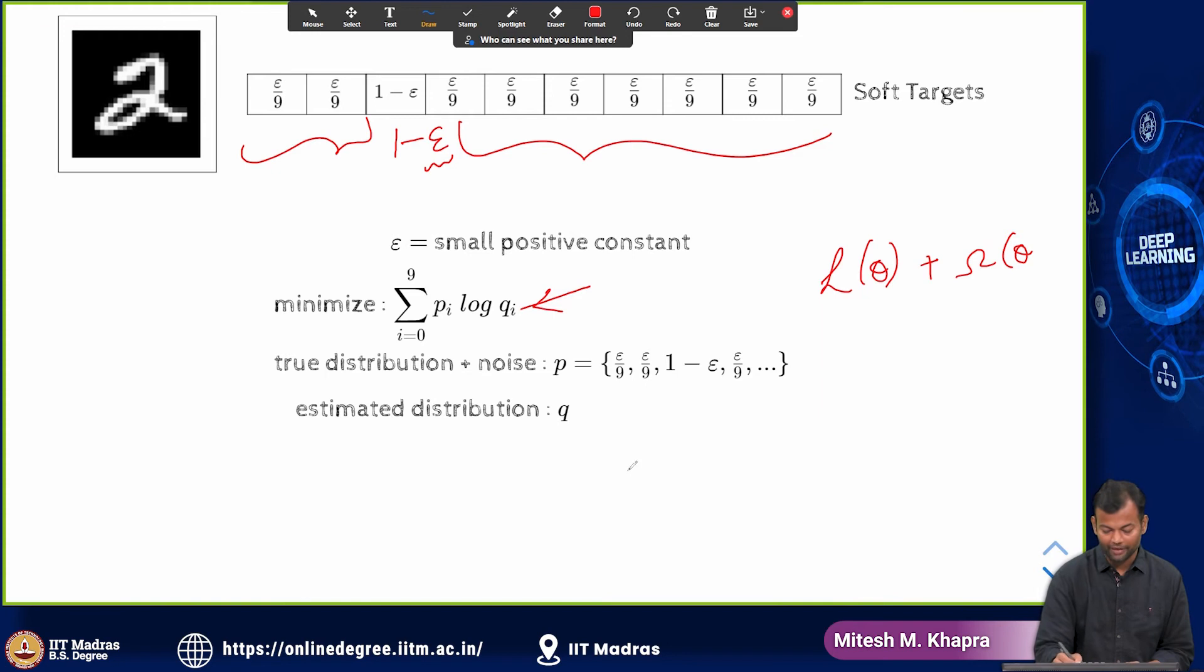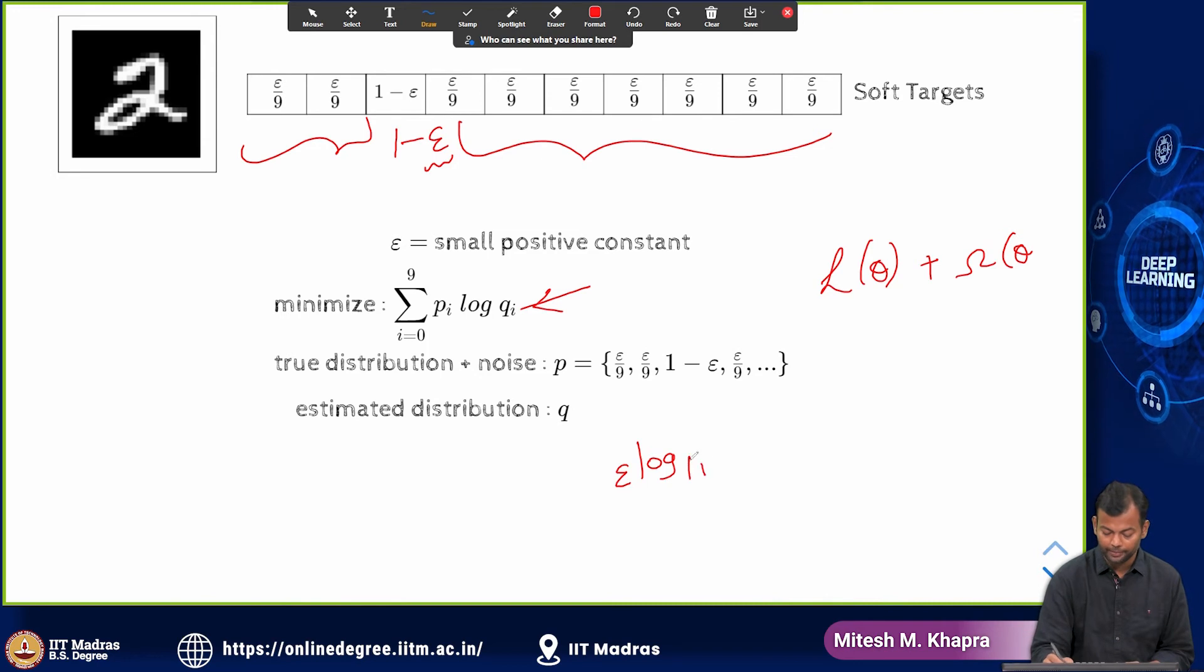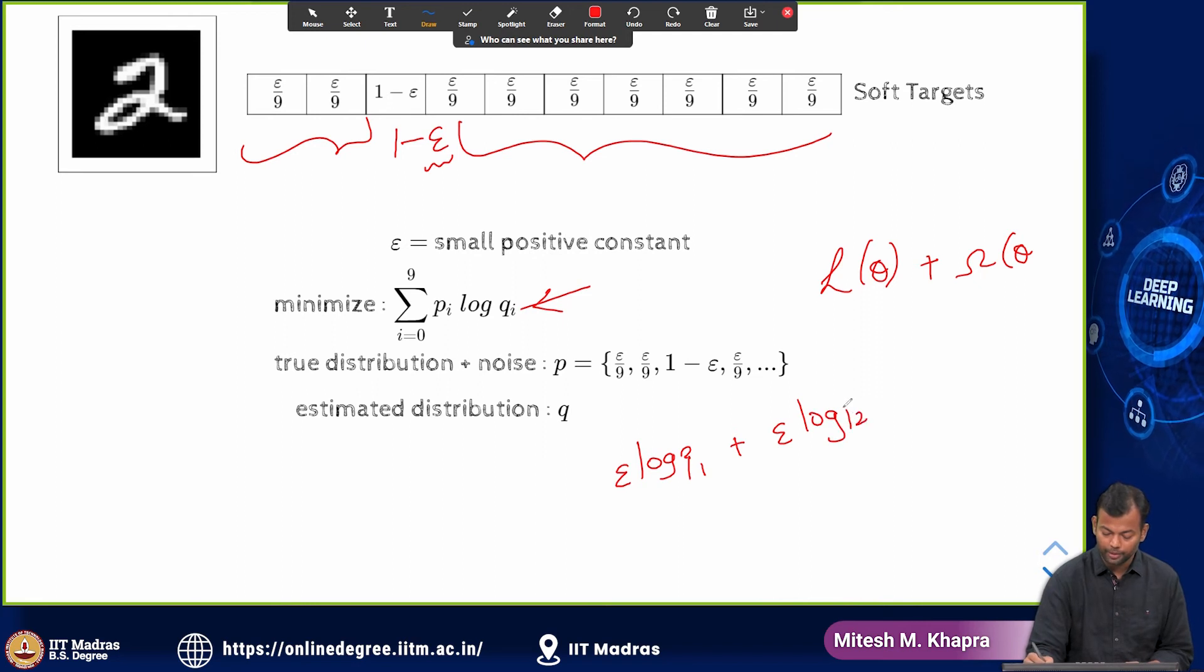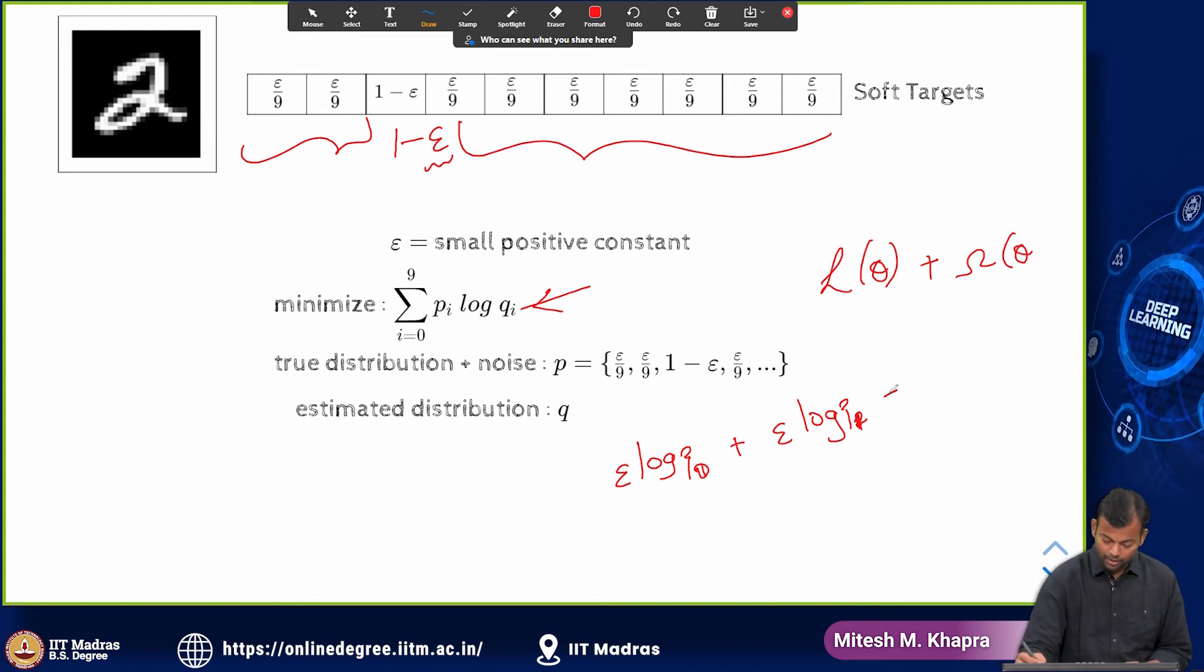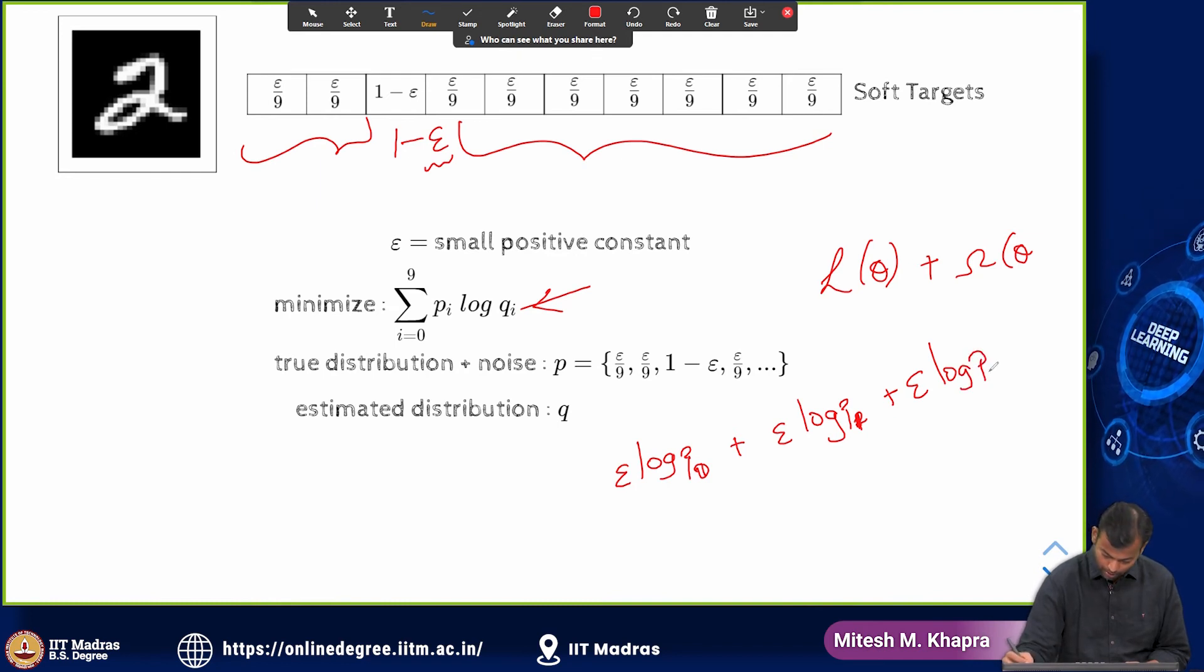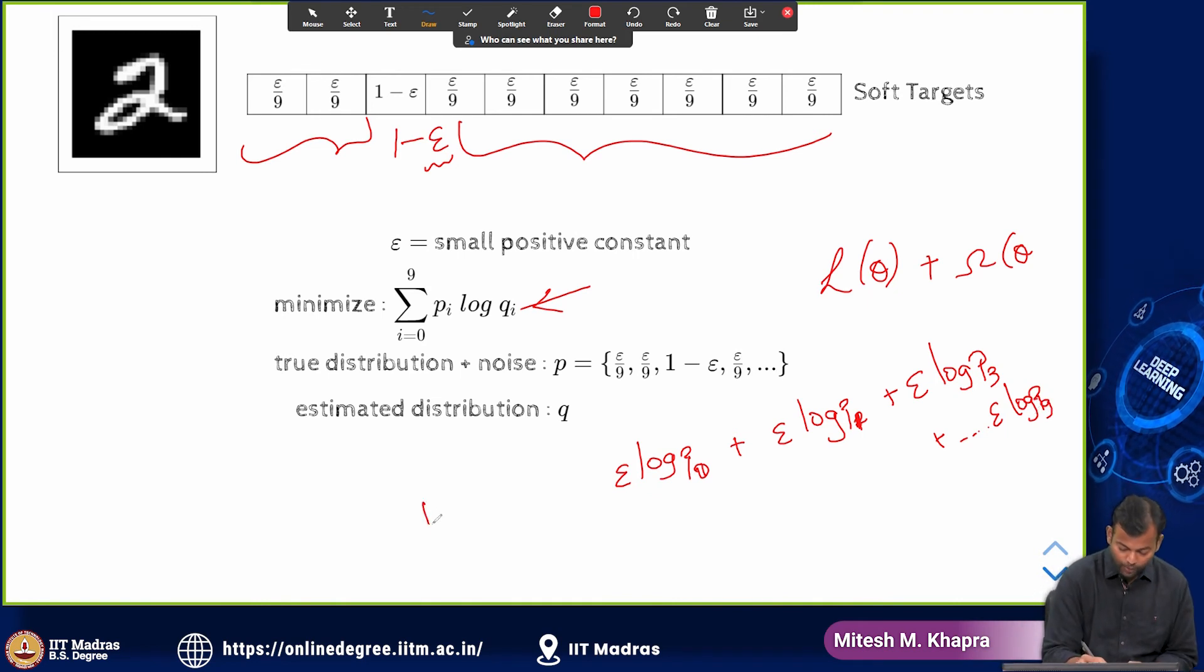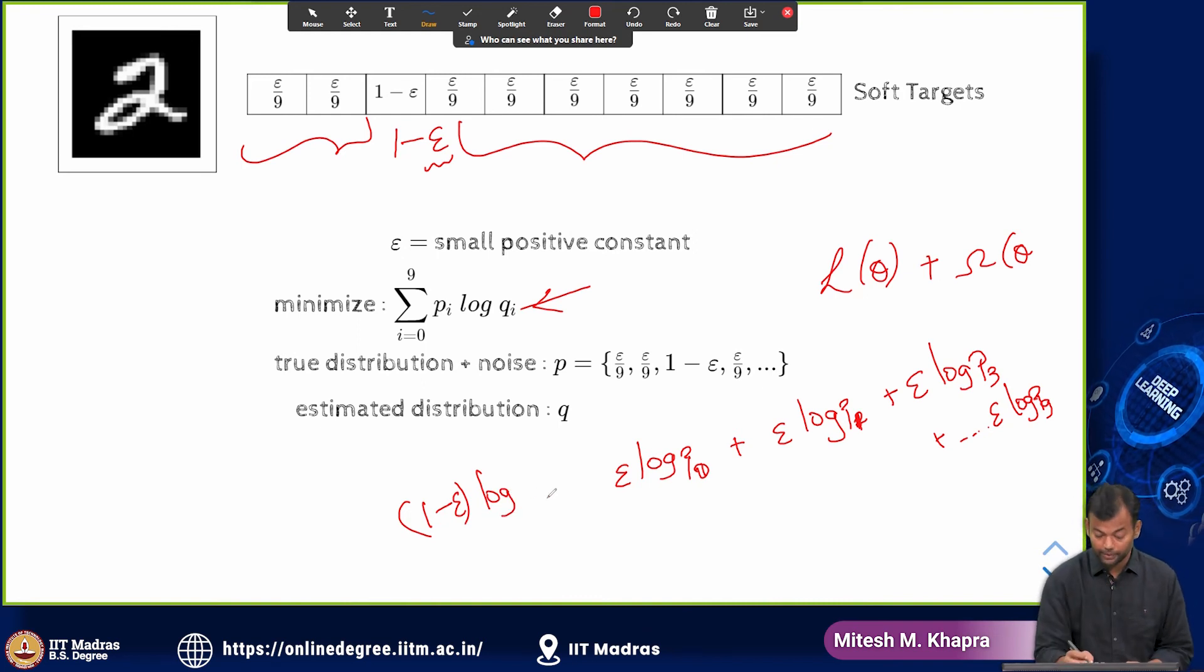What you have now is epsilon into log of P 1 plus epsilon into log of P 0 P 1 plus epsilon into log of P 3 log of P 9 and then you also have this 1 minus epsilon into log of P 2 which was the correct label. For the correct label this is the weight.